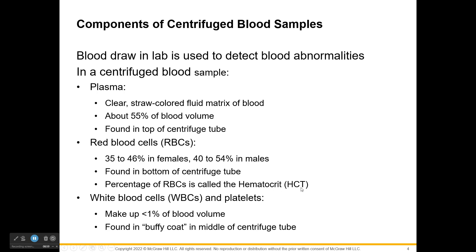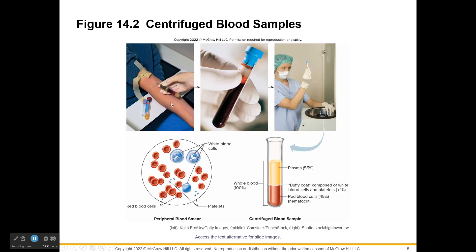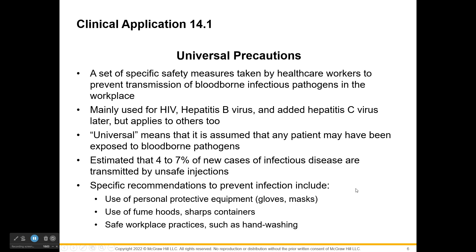Highlight that hematocrit is the percentage of red blood cells out of total blood volume. Between the heavy red blood cells at the bottom and the light straw-colored plasma at the top is the buffy coat — a white film where white blood cells and platelets are found. A picture shows blood drawn and then centrifuged, separating into plasma, buffy coat, and the hematocrit layer.